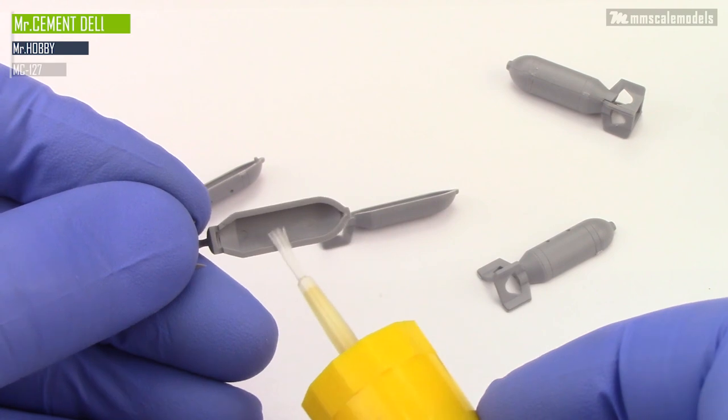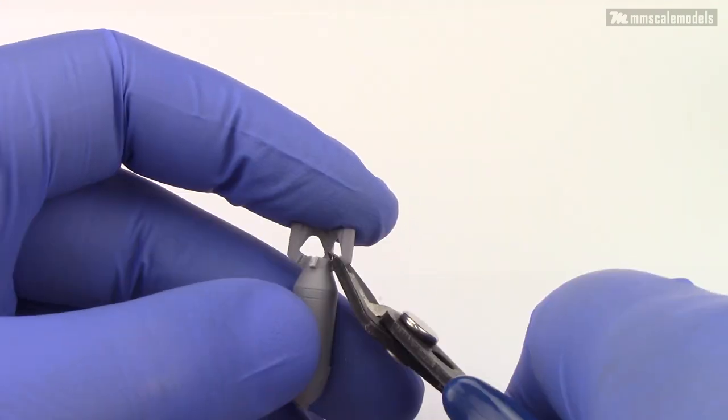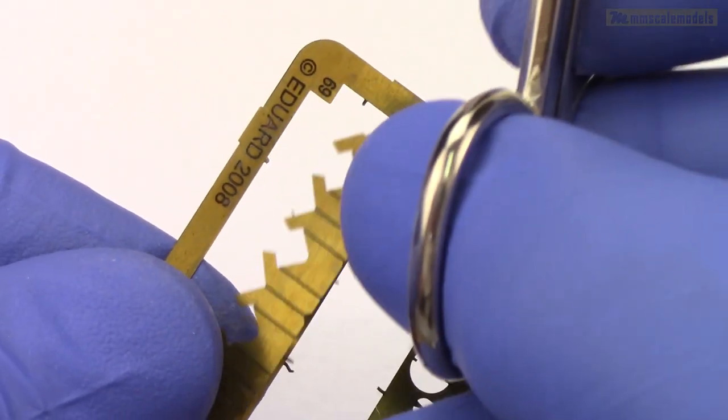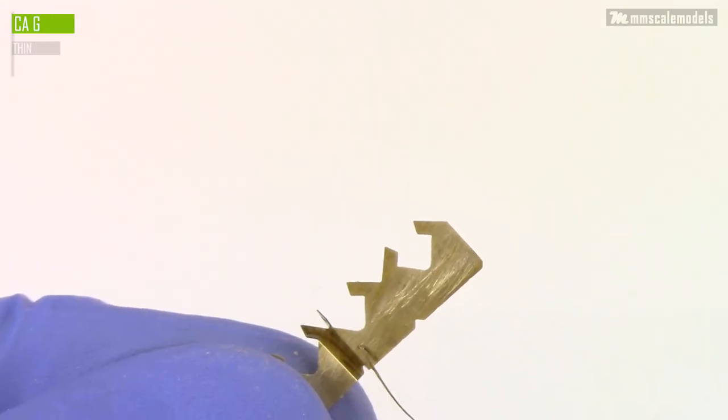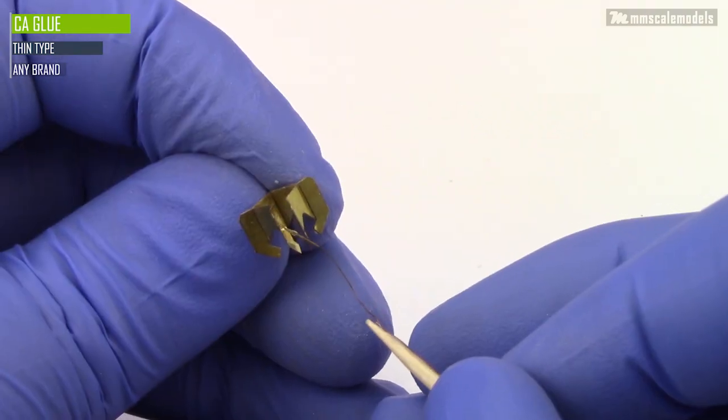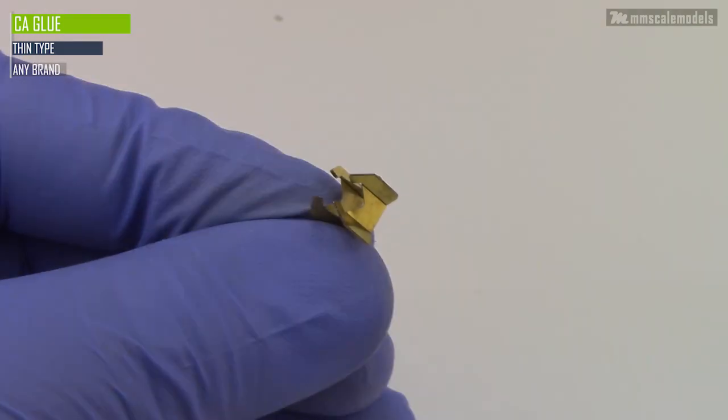The kit bombs are not bad but the fins are very thick and this is a no-go. Fortunately I have some leftover photo-etch fins from an Eduard kit and I am going to employ them here. As can be expected the photo-etch needs some bending and gluing. But when that is done the fins will be looking much better and will have much more true to scale appearance.